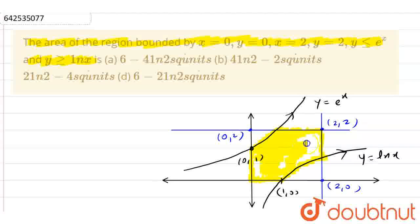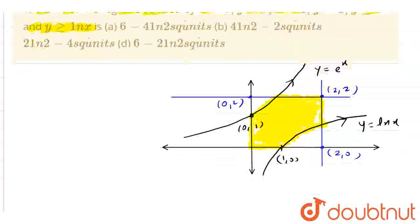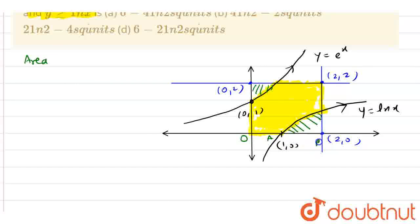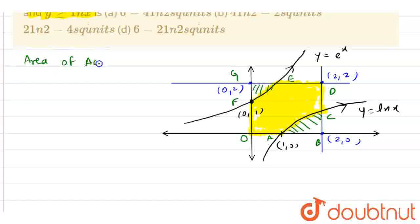We have to find the shaded area which you can see on your screen. Now, how to find that area? Let's first find out this area. Let me name the regions as O, A, B, C, D, E, F, G. I am going to find the area of region ACBA. We have to take the limit from 1 to 2 and the value of y from the curve is ln x.